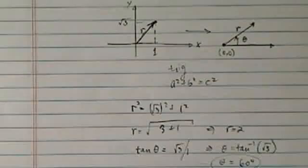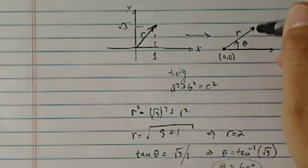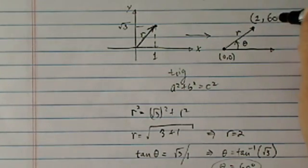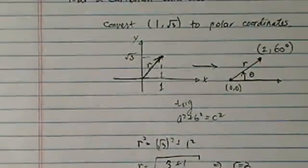All right, so for our particular problem, let's see where I left off. Okay, so this point also can be described as r and theta: r is two units, theta is 60 degrees, and there you have it. That's how we convert back and forth.